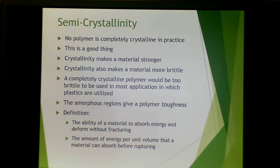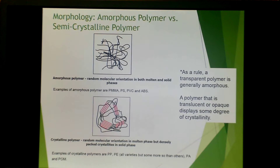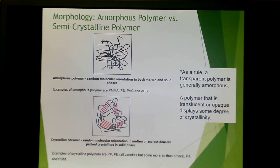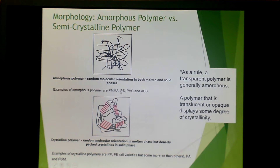Here we have a graphical representation of amorphous versus crystalline. When you have an amorphous polymer, you have random molecular orientation in both the molten and solid phase. Some examples of this are polymethylmethacrylate, polystyrene, PVC, and ABS.